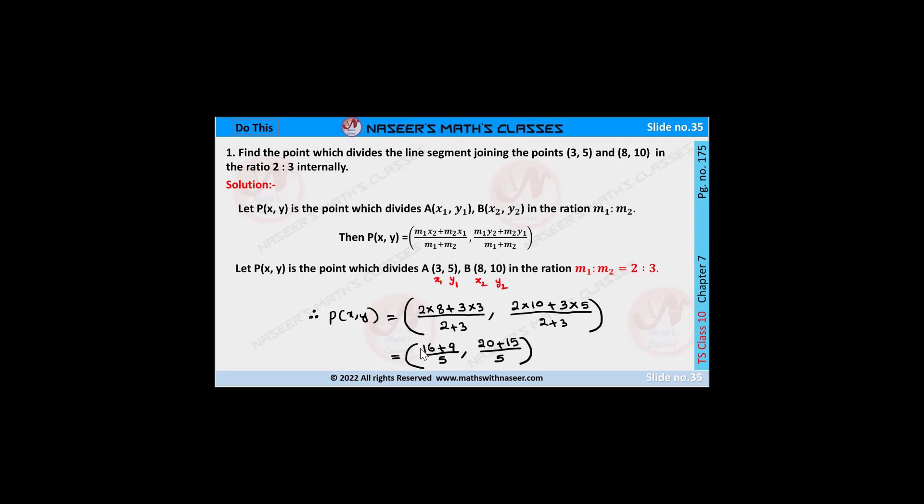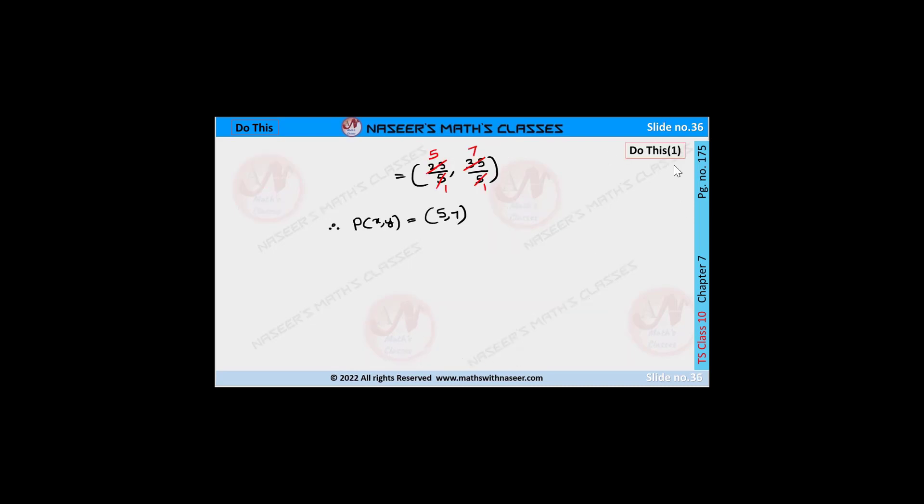So we can write the ordered pair as (16+9)/5, (20+15)/5. In the x-coordinate, 25/5 is 5, and in the y-coordinate, 35/5 is 7. Then we get P(x,y) equals (5,7).